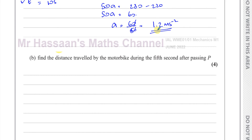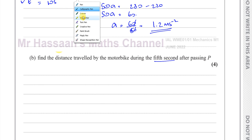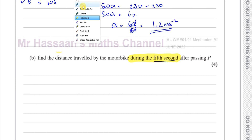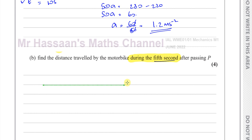Then part B says: find the distance traveled by the motorbike during the fifth second after passing P. During the fifth second — now this is the key in this question, and I'm sure a lot of people got caught out by this. It says during the fifth second.